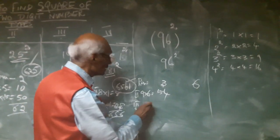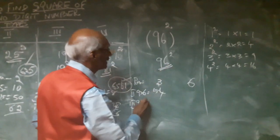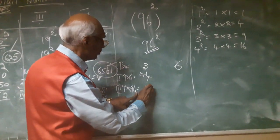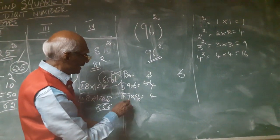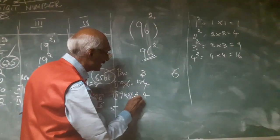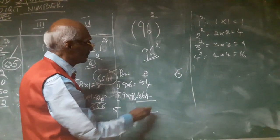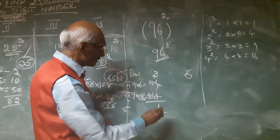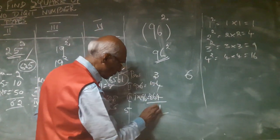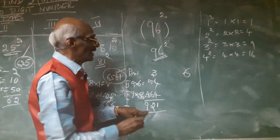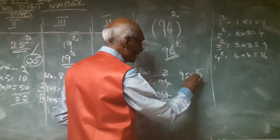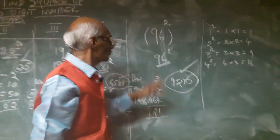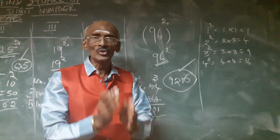Step three: multiply the first digit 9 by the two-digit number 96 — 9 into 96 equals 864. The remainder from step one is 3. Now find the total by adding step two result (54), step three result (864), and the remainder (3): combining all values gives 9216. So 96 squared equals 9216.